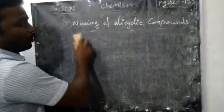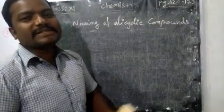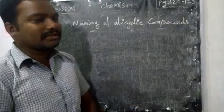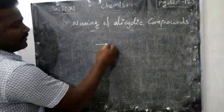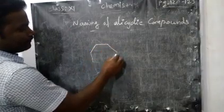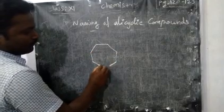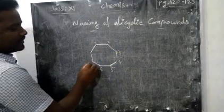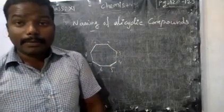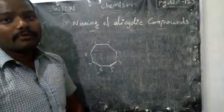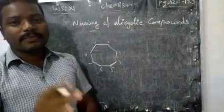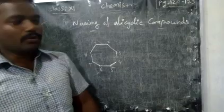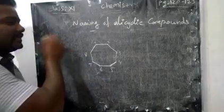For alicyclic compounds with more than 6 carbons: there is no benzene ring, no benzenoid structure formed, but they form cyclic compounds, so we still call them alicyclic compounds. Even an 8-carbon cyclic ring — since it does not satisfy the benzene rules — is an alicyclic compound. Count the carbons: 1, 2, 3, 4, 5, 6, 7, 8 — so 8 carbons forming a cyclic compound. It does not qualify as benzene because benzene must obey certain aromaticity rules. If those rules are not obeyed, we call it an alicyclic compound.